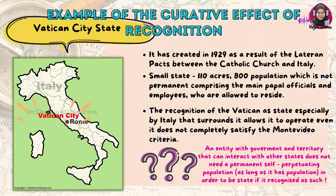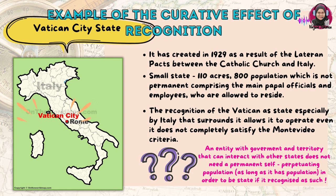Comparing Transnistria to Vatican City — Vatican City was created in 1929 as a result of the Lateran Pact between the Catholic Church and Italy. It is a very small state with only 110 acres and approximately 800 residents, comprising mainly papal officials and employees. The recognition of Vatican City as a state, especially by Italy which surrounds it, allows it to operate even though it does not completely satisfy the Montevideo Convention criteria.